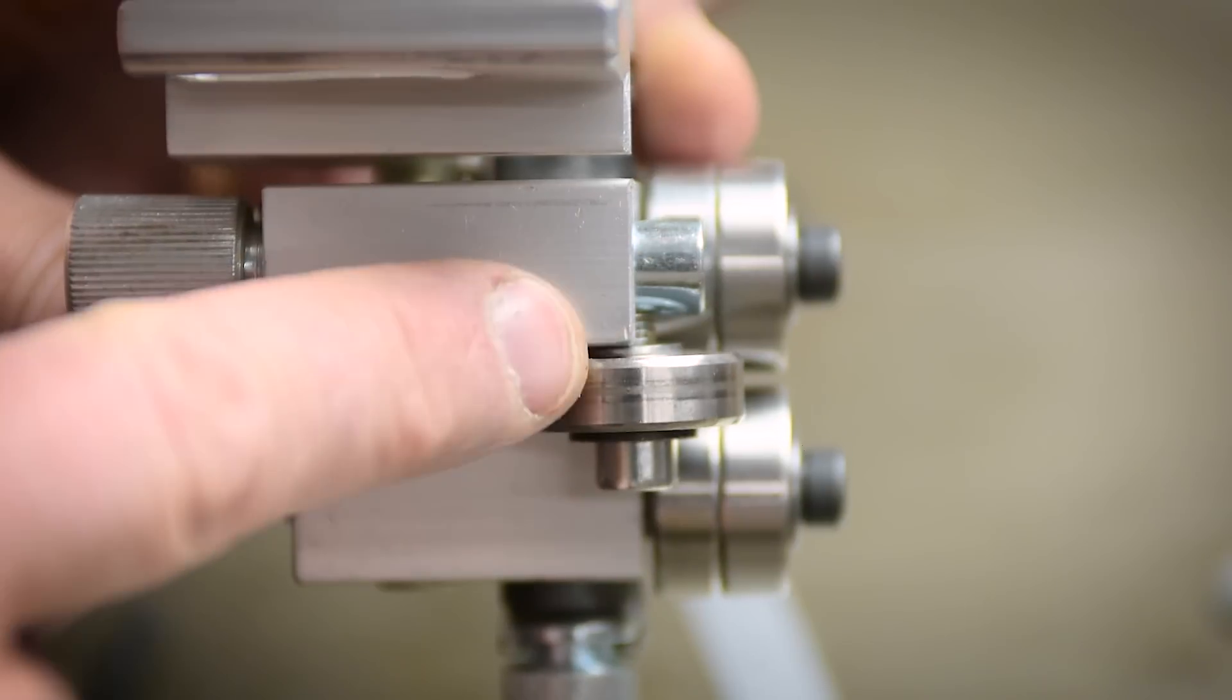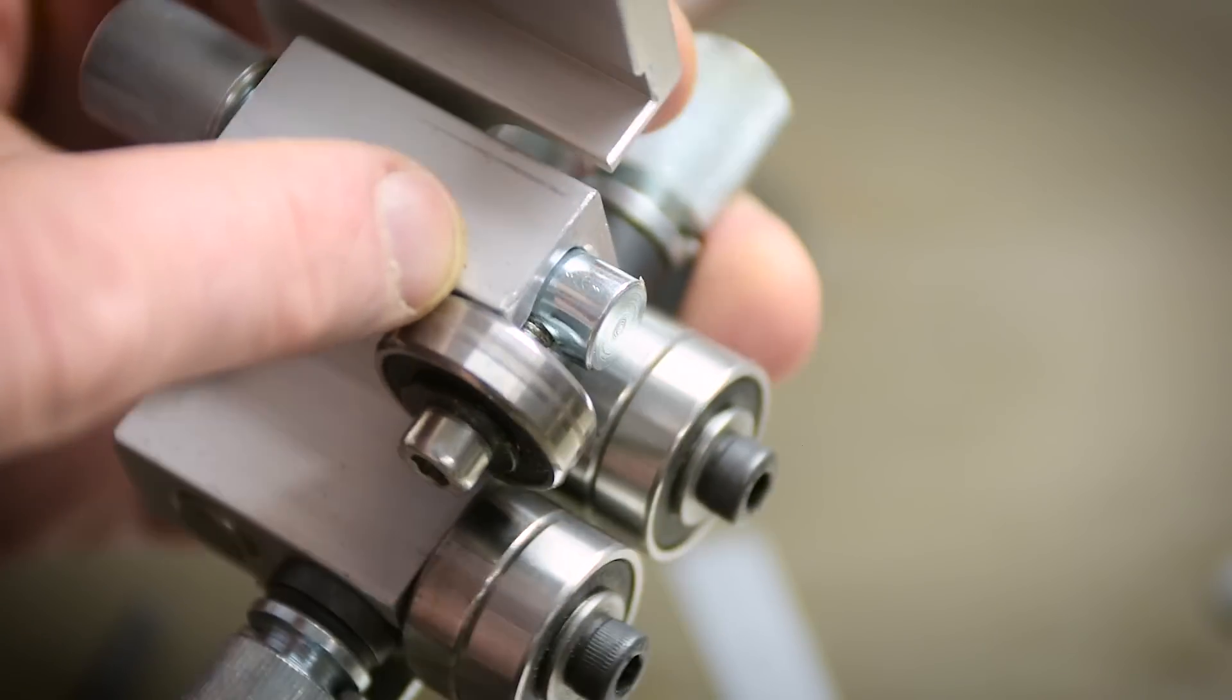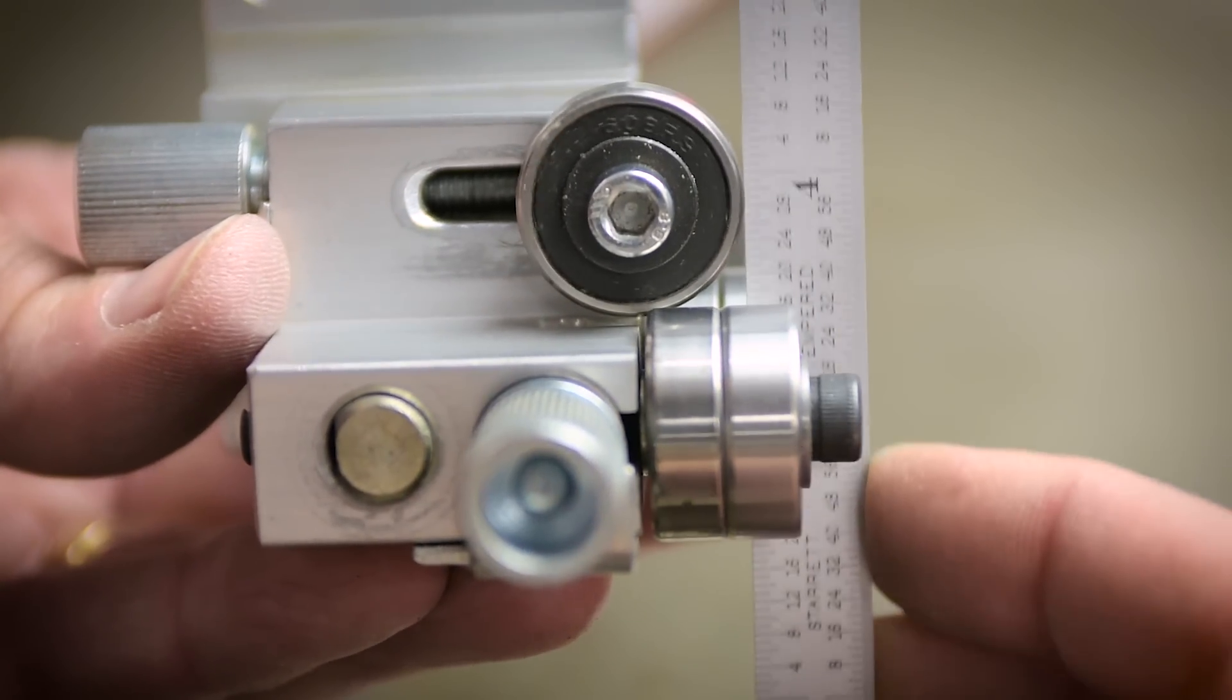By leaving at least half the washer in contact with the aluminum block, it gave me almost a quarter inch more travel. Now let's take a look at the bottom guides.